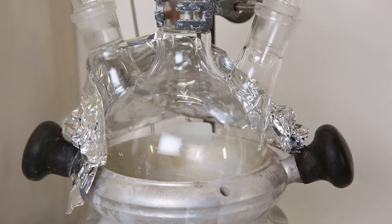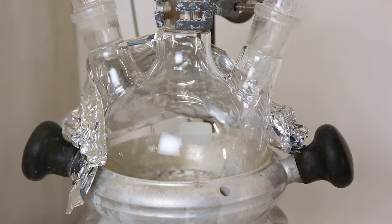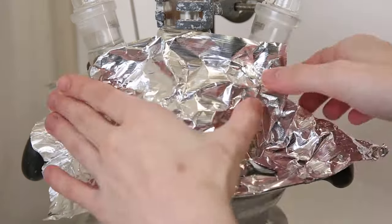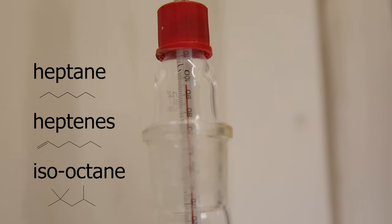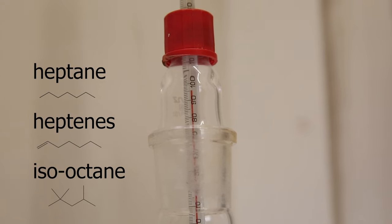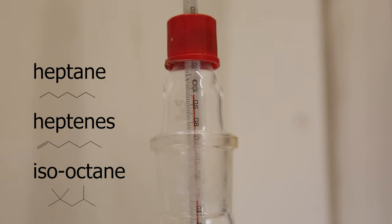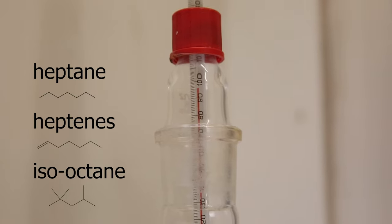Then, I put all the contents of this bottle into the flask for redistillation. I heat it up quickly, and distilled over everything up until 96°C. After a while, it stopped coming over, so the iso-octane and heptane is now in this fraction.